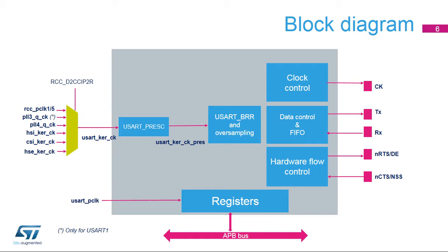TX and RX pins are used for data transmission and reception. NCTS and NRTS pins are used for RS-232 hardware flow control. The driver-enabled pin or DE, which is available on the same I/O as NRTS, is used in RS-485 mode. The slave-select or NSS pin is used in synchronous slave mode and is available on the same I/O as NCTS. The clock output or CK is dual-purpose: when the USART is used in synchronous master-slave mode, the clock provided to the slave device is output on the CK pin. When used in smart card mode, the clock provided to the card is also output on the CK pin.